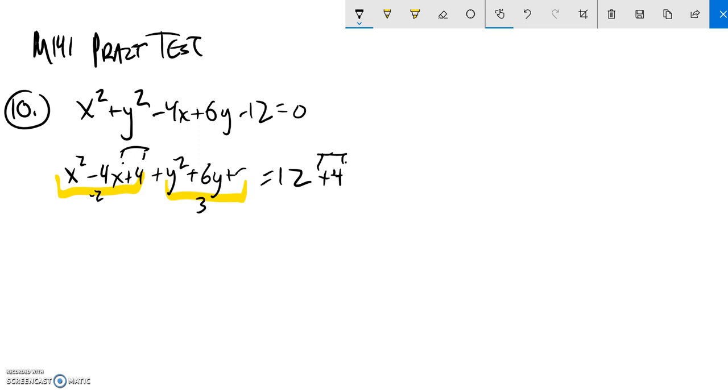And then half of six is three, three squared is nine, so if I add nine here, add nine here as well.